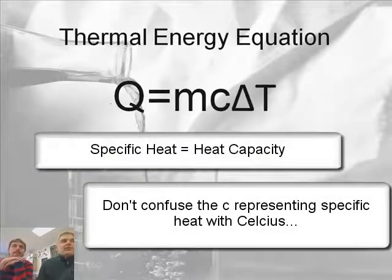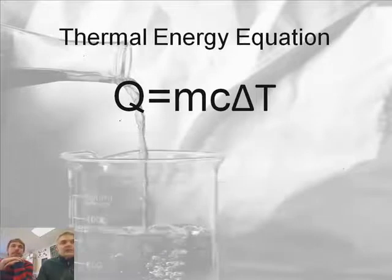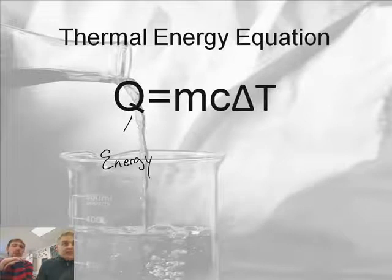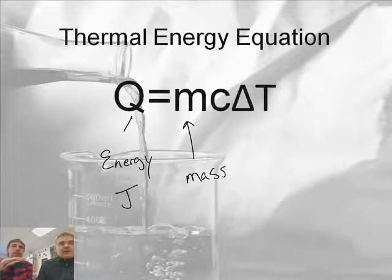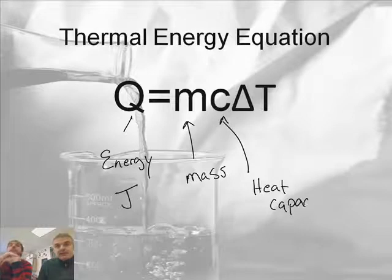Okay, so there's an important equation called the thermal energy equation. And this is the equation: Q equals mc delta T, where Q is your energy or your heat measured in joules. M is the mass. C is this new thing we're talking about, it's called the heat capacity or the specific heat. Sometimes called the specific heat capacity.